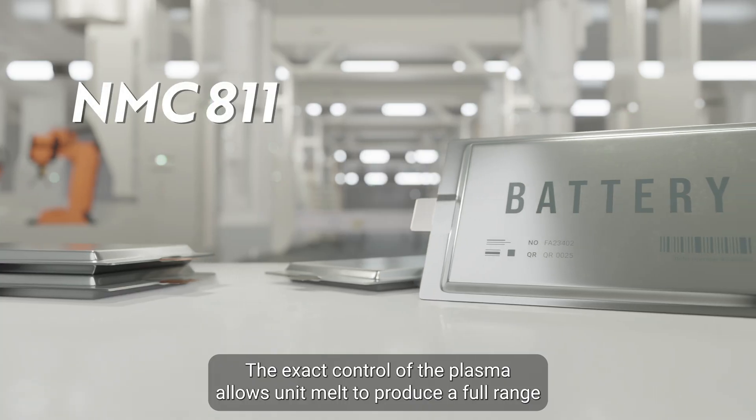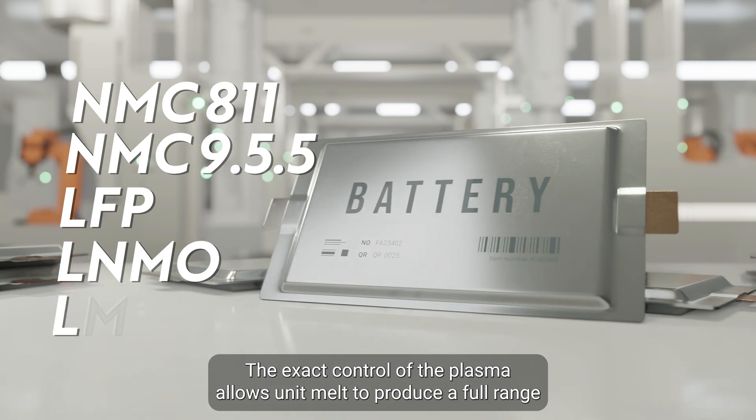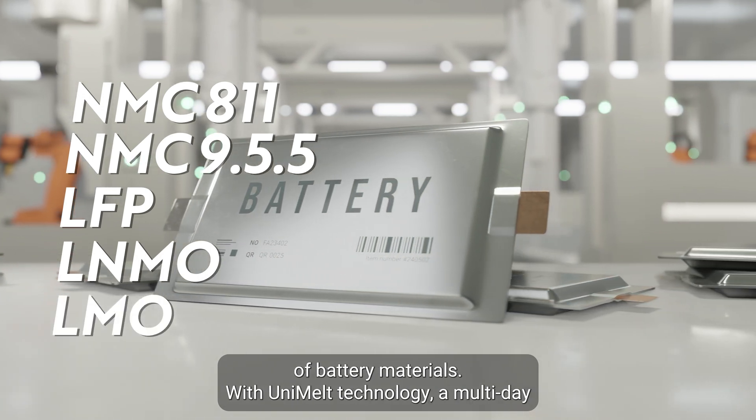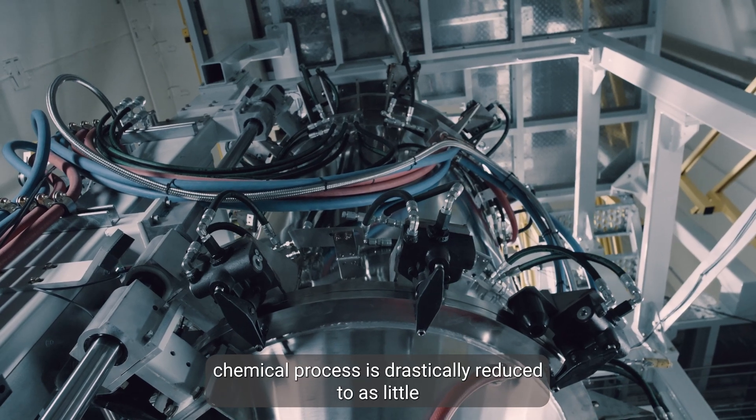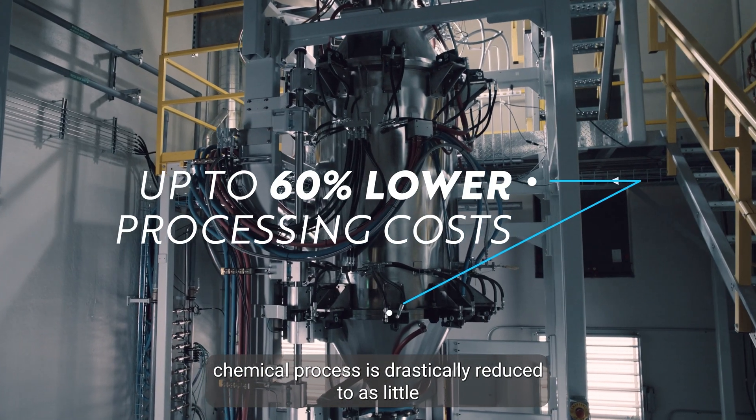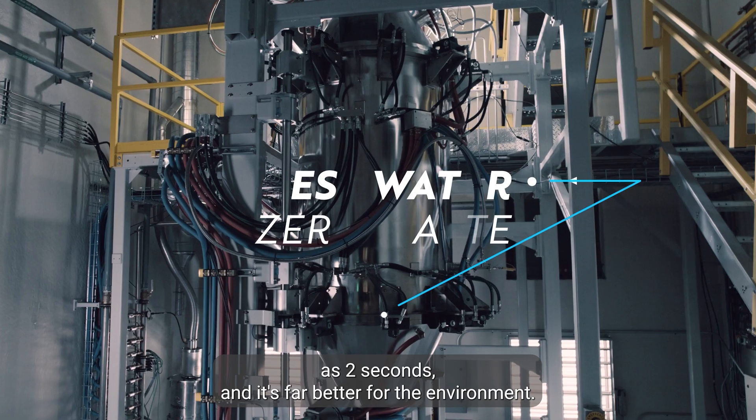The exact control of the plasma allows Unimelt to produce a full range of battery materials. With Unimelt technology, a multi-day chemical process is drastically reduced to as little as two seconds and it's far better for the environment.